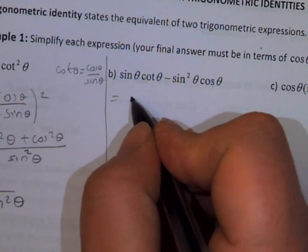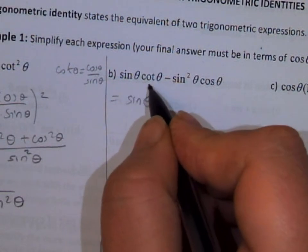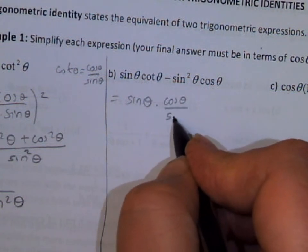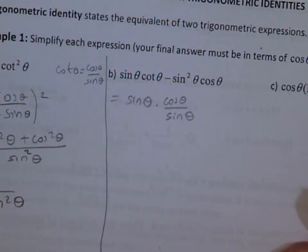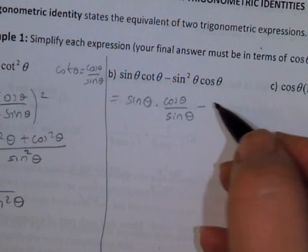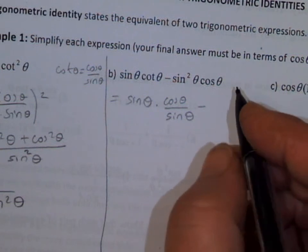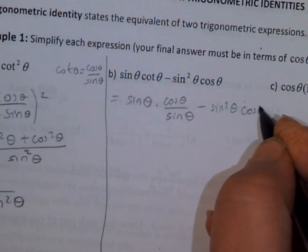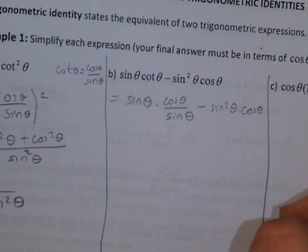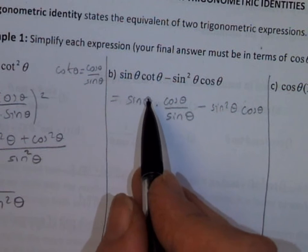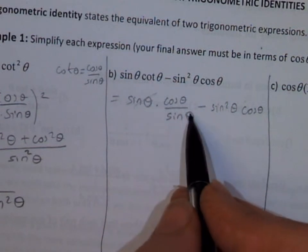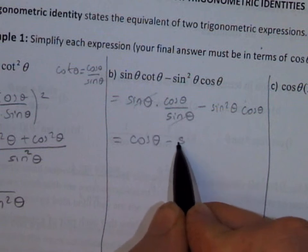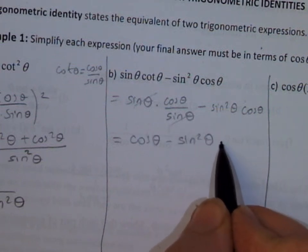For part B: sine theta times cotangent theta — cotangent theta is cosine theta over sine theta — minus sine squared theta times cosine theta. So this gives us cosine theta minus sine squared theta times cosine theta.